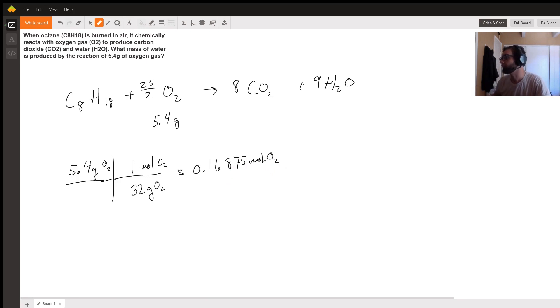Now that we have moles of oxygen, we can compare that to other things based on our stoichiometric coefficients. We have this amount of moles of oxygen and we want to know what mass of water we have, so we've got to first find moles. We got 0.16875 moles of oxygen, then we use our stoichiometric coefficients: 25 over 2 moles of oxygen gives us 9 moles of water.